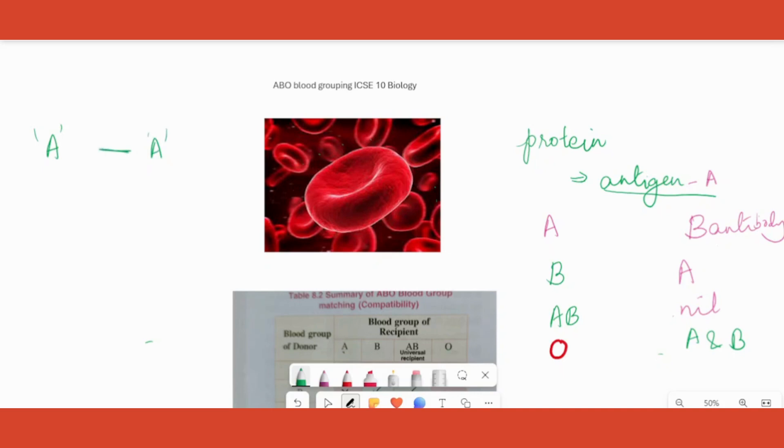Now the thing is that if antigen A and antibody A come in contact, they will coagulate - blood will clot. Therefore, a person with antigen A, meaning blood group A, should never receive blood having antibody A, which is B blood group. A blood group can never give blood to B blood group and so on.